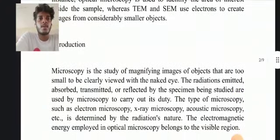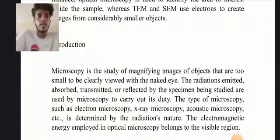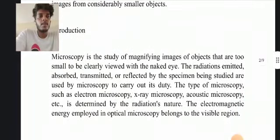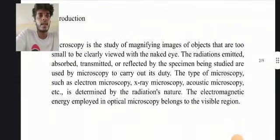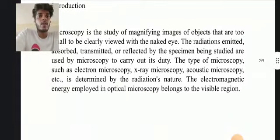Introduction: microscopy is the study of magnifying images of objects that are too small to be clearly viewed by the naked eye. Radiation emitted, transmitted, or affected by the specimen being studied is used by microscopy to carry out its function. The type of microscopy — such as electron microscopy, x-ray microscopy, acoustic microscopy, etc. — is determined by the nature of the radiation used.